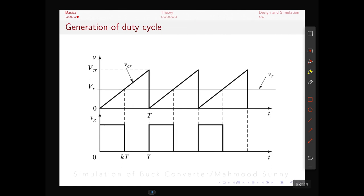We can generate duty cycle in various ways. Here is an example. We can use a comparator. One voltage can be a periodic sawtooth signal. That is our carrier signal VCR. And a DC reference voltage Vr. And we can actually adjust the duty cycle by varying the reference voltage.